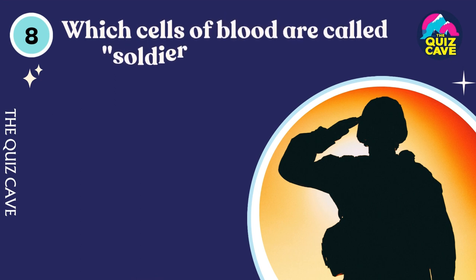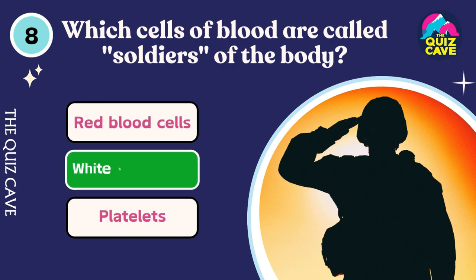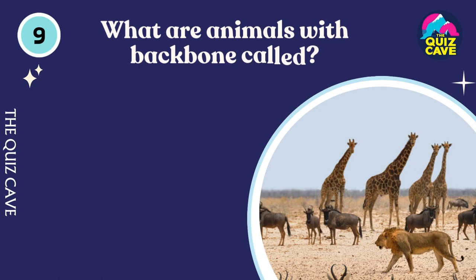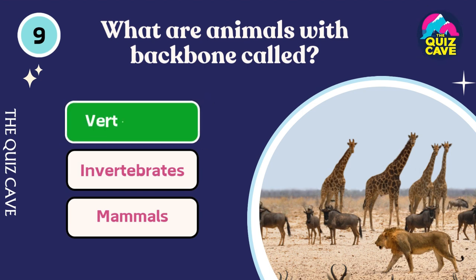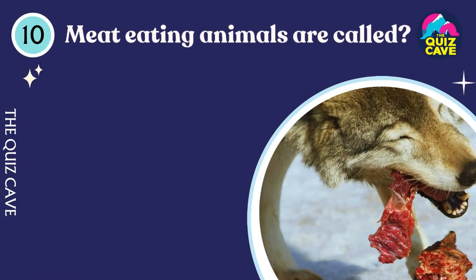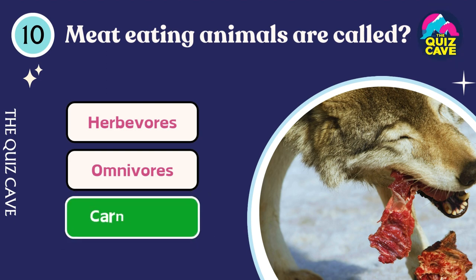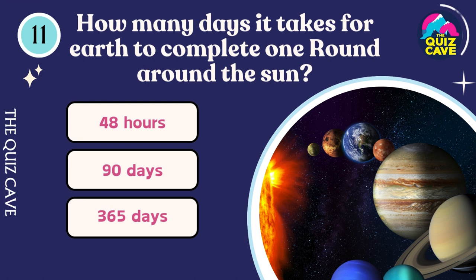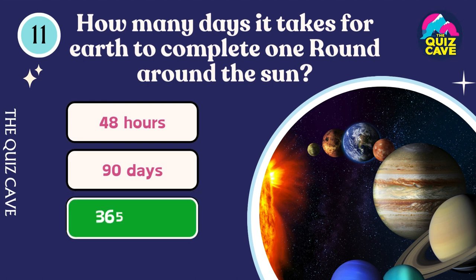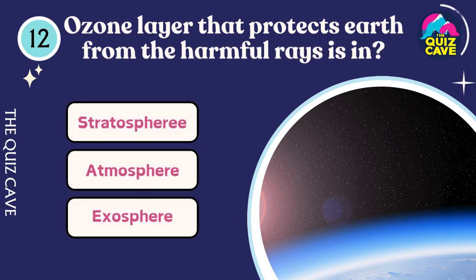Which blood cells are called soldiers of the body? White blood cells. What are the animals with backbone called? Vertebrates. Meat-eating animals are called carnivores. Earth completes one round around the Sun in 365 days. The ozone layer that protects Earth from harmful sun rays is in the stratosphere.